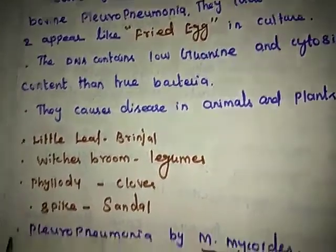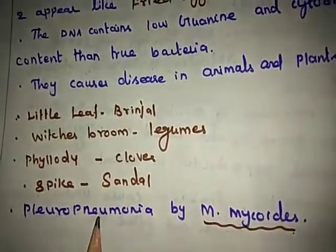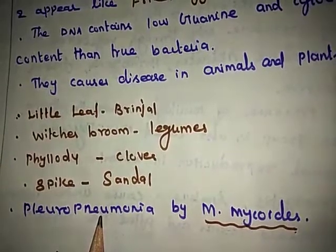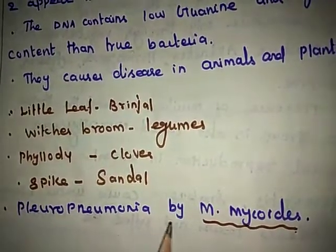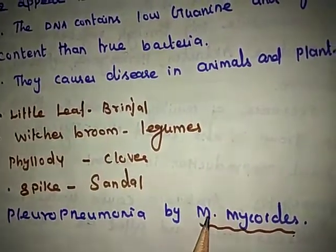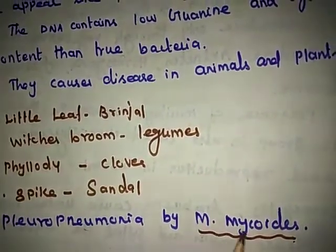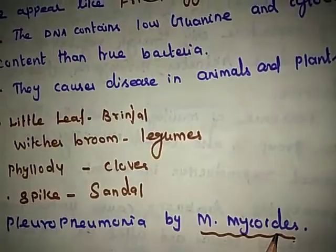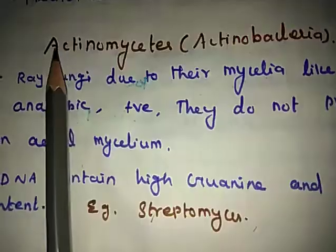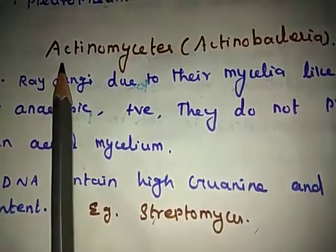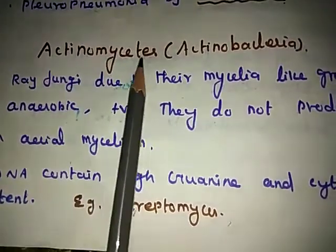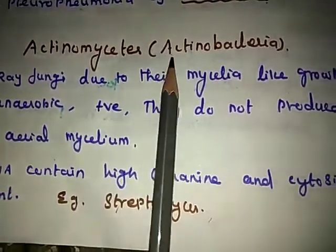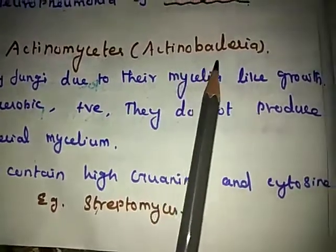Pleuropneumonia in cattle is also caused by Mycoplasma mycoides. Now let us see about Actinomycetes, also called Actinobacteria.